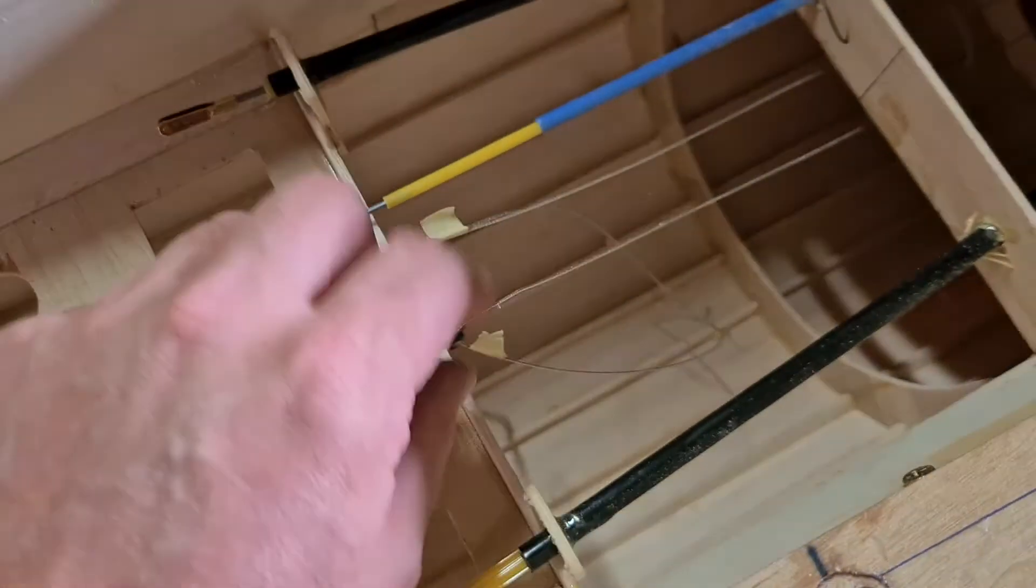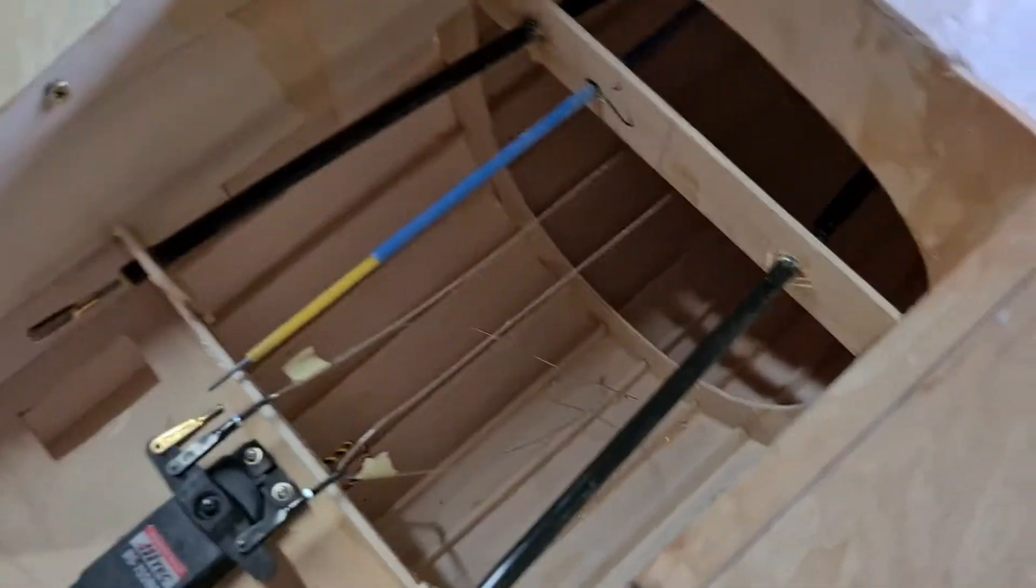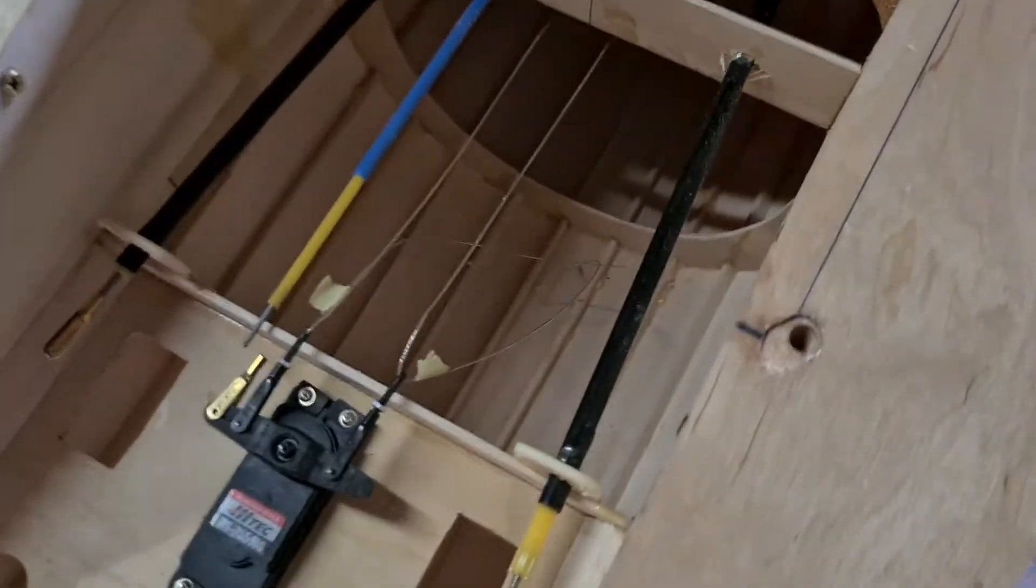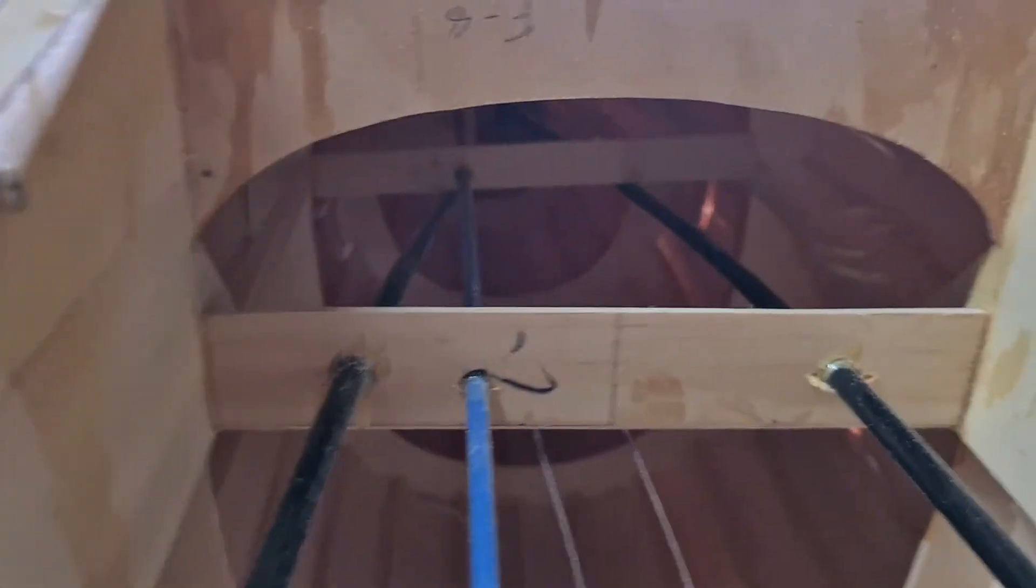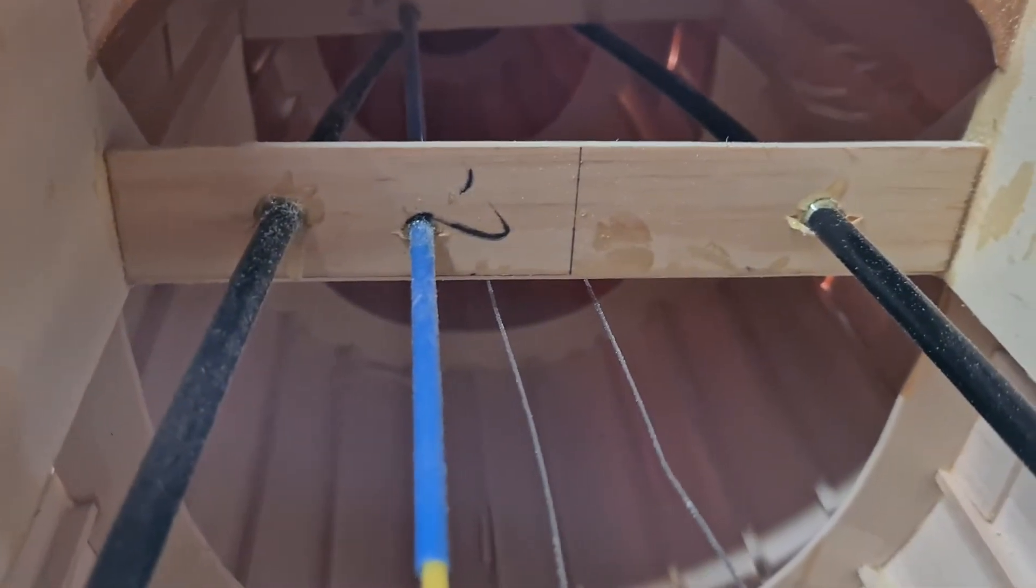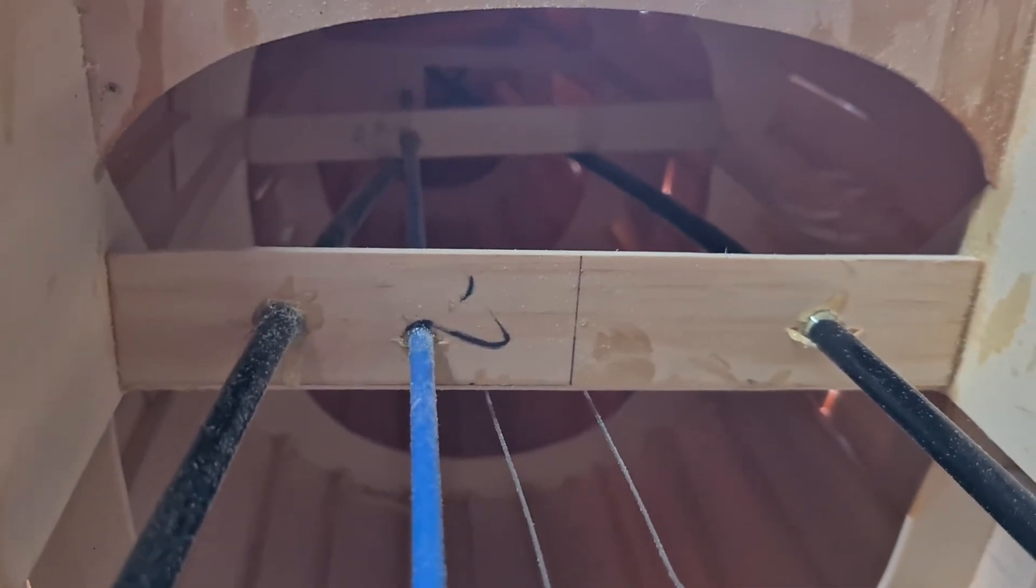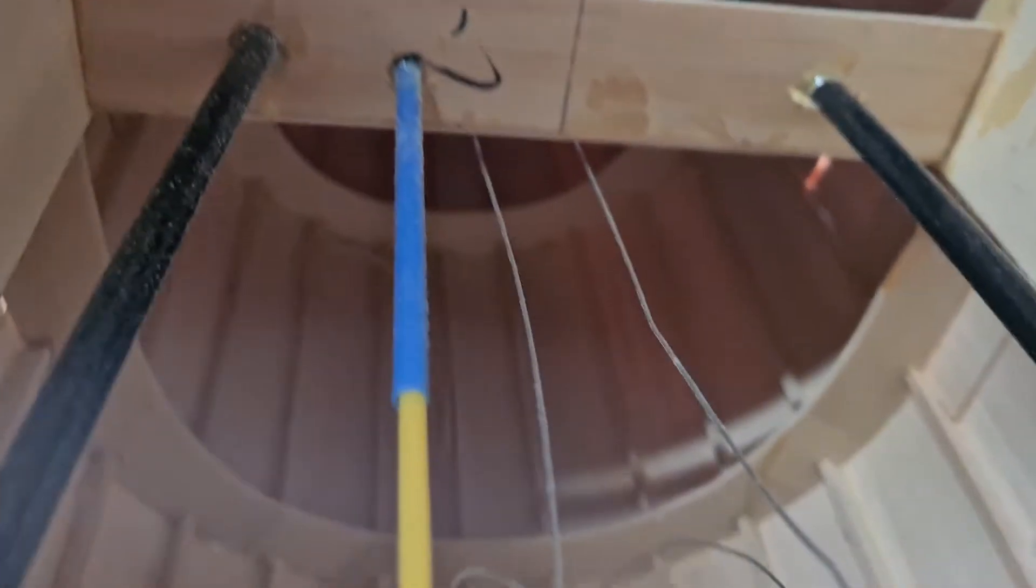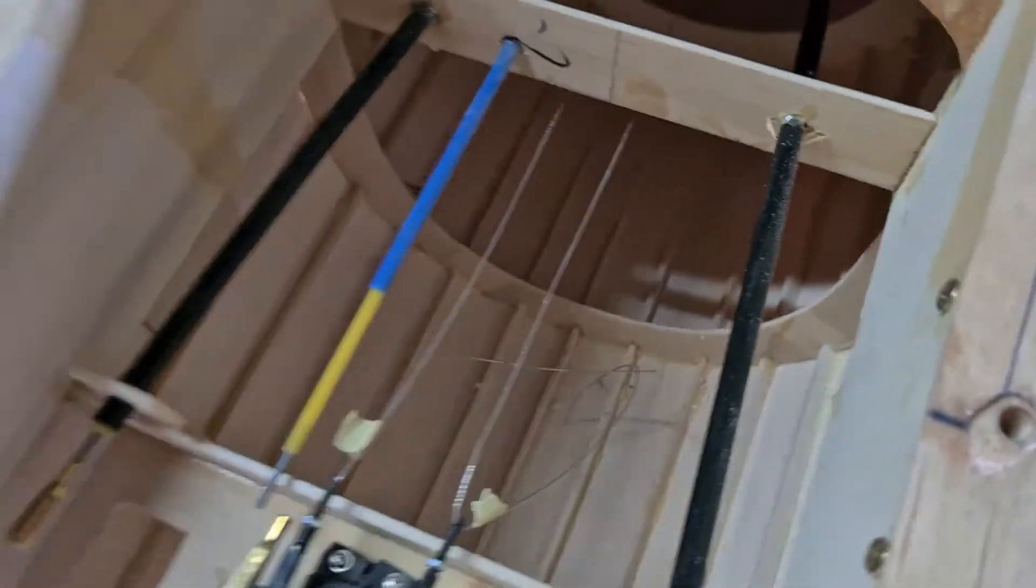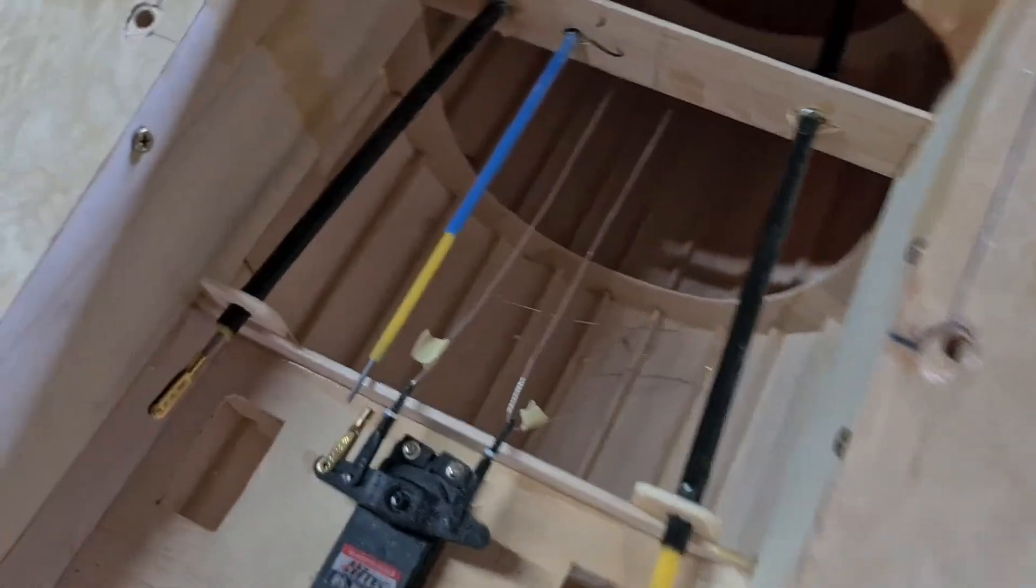That is the rudder servo. I haven't actually crimped these yet - I've crimped that end, not this end, just because I'll wait till I have the radio up and running and everything. That's my cross members. It's all really nice. I'm really happy with that actually. It took me a lot of work, but really happy.